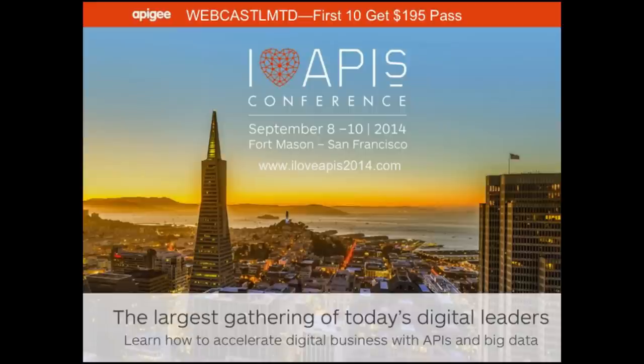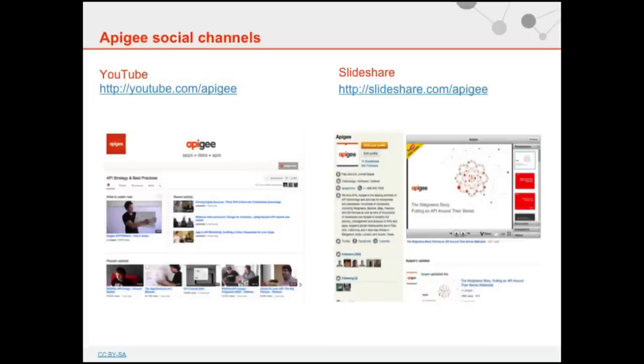Before we start, I just want to let you know about the I Love API conference. We have a promo code you can use: webcastlmtd. For the first 10 people who register, they'll be able to get a pass for $195. It's a great conference — we'll be talking about APIs and analytics. We'll also be posting this webcast onto YouTube and the slides will be on SlideShare.